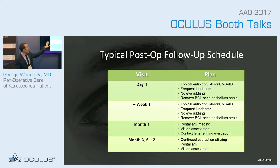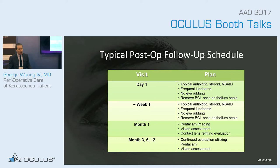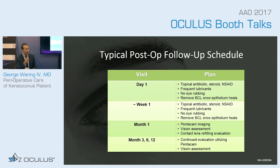Our typical post-operative regimen includes topical antibiotics, steroids, and NSAIDs on day one with lubricants, followed by a gradual taper of steroids typically over a month. Frequent lubrication helps vision return, and around one month we restart diagnostic imaging with the Pentacam and begin looking at our progression and regression displays using the Belin keratoconus progression display with advanced software. We then follow at 3-month intervals — typically at 3 and 6 months — then at 12 months — tracking diagnostics over time to confirm treatment effect.